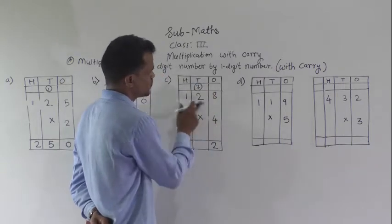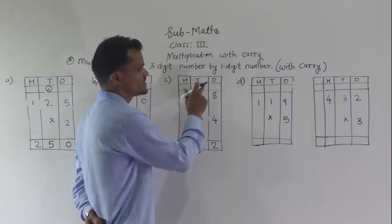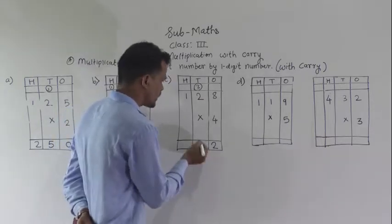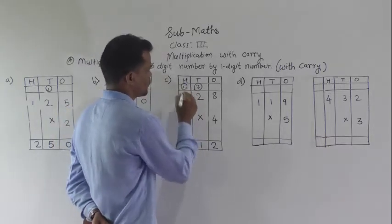Next, 4 times 2 is 8, and 8 plus 3 is 11. So, write 1 here and 1 carry forward.